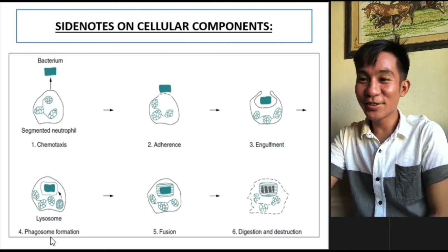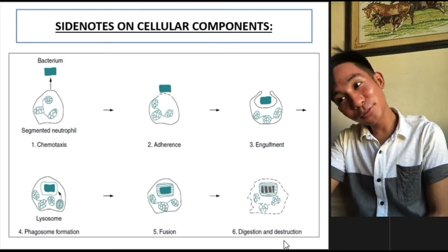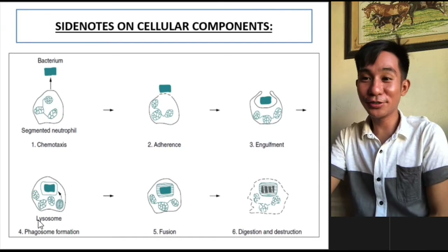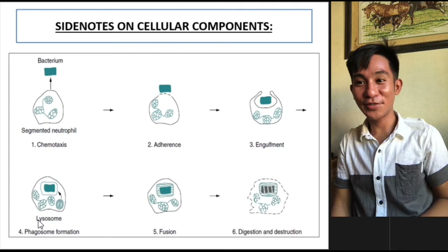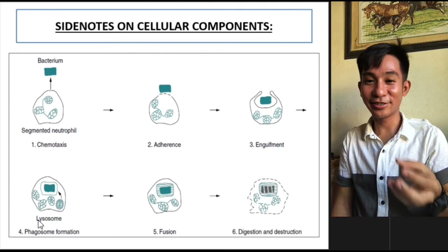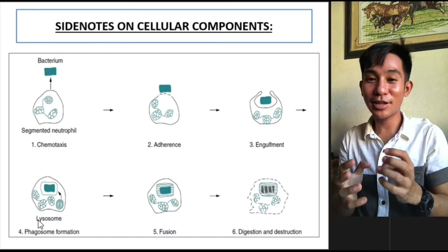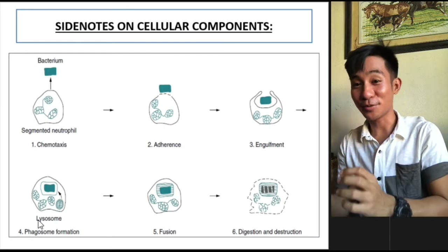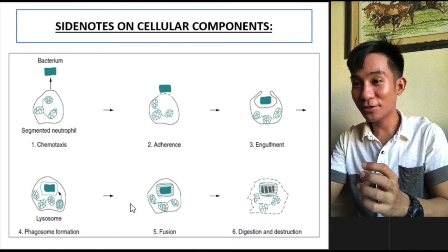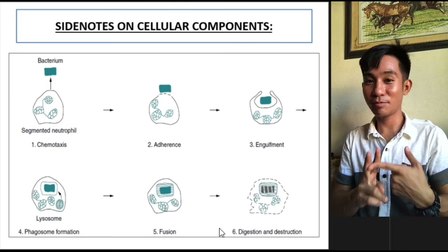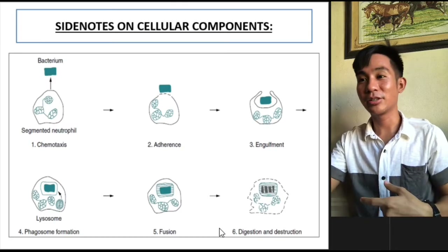So upon engulfment, you have your phagosome — the combination of your pseudopod plus your microbe. Then, upon the combination of your lysosome plus your microbe, we have the phagolysosome. After that comes digestion and destruction, which can occur via oxygen-dependent and oxygen-independent mechanisms. That's the end of my lecture. Thank you very much for joining.